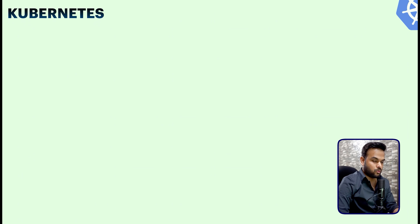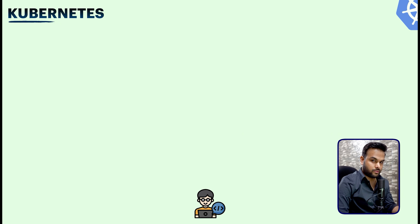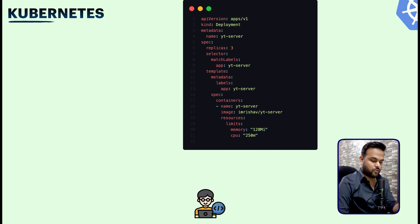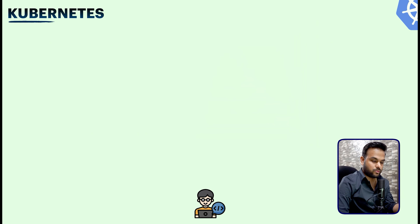As a developer, you write those YAML files and you need to feed them to the Kubernetes daemon or the control plane running on your system. To communicate with the control plane, we use a command-line tool called kubectl. kubectl is the way a developer communicates with the control plane or any of the services running inside a Kubernetes cluster.